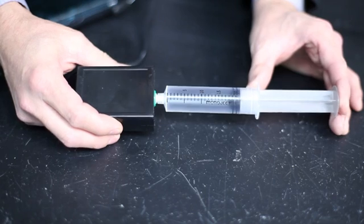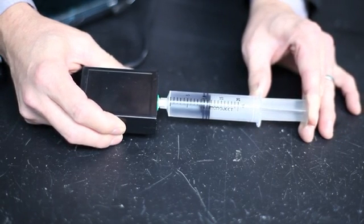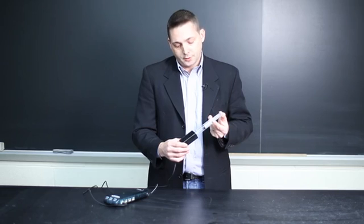Right now it's at 20 milliliters, and now I'm going to reduce the volume to 10 milliliters. By doing that, we increase the pressure. We've decreased the volume by half, so we should see a corresponding increase in pressure by a factor of 2.